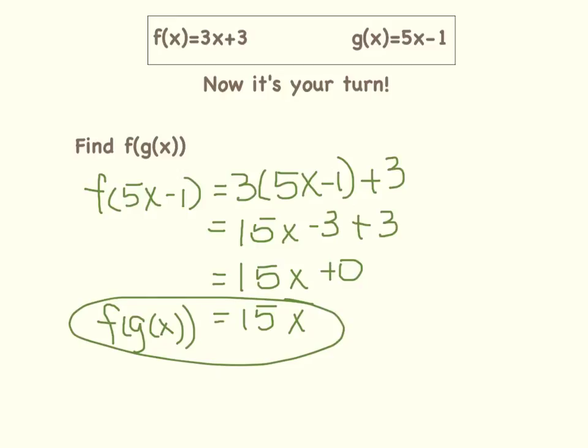So f(5x - 1) = 3 times (5x - 1) + 3. Here again, you distribute, so we have 15x - 3, and then you just bring down this 3. Then we can simplify. Negative 3 plus 3 is 0, and so our answer is 15x. f(g(x)) = 15x.